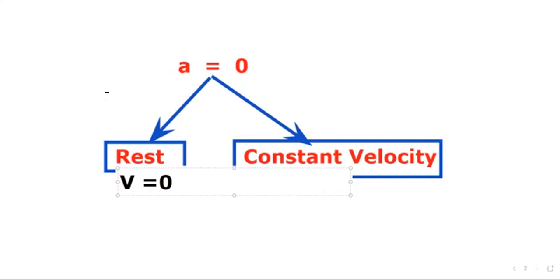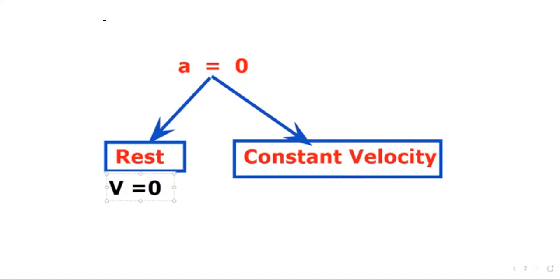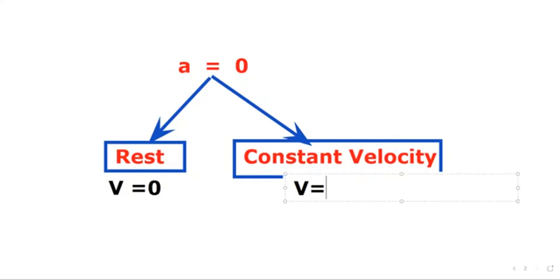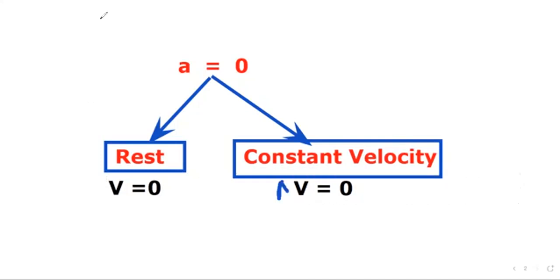If the object is moving with constant velocity, that means the change in velocity is 0. So one case is when velocity is 0, and the second case is when the change in velocity is 0. Now let's move to another case: unbalanced forces.